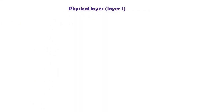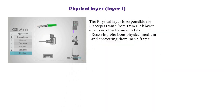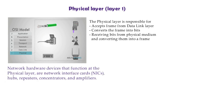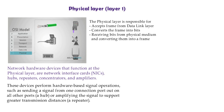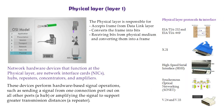Layer 1, the physical layer. The physical layer is responsible for accepting frames from the data link layer, converting them into bits, and transmitting them. It also receives bits from the physical medium and converts them back into frames. Network hardware at this layer includes network interface cards, hubs, repeaters, concentrators, and amplifiers. Physical layer protocols and interfaces include EIA, TIA, X.21, HSSI, SONET, B24, and B35. Thank you for watching.